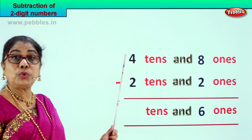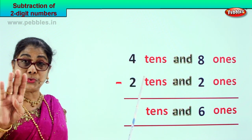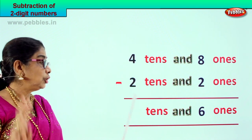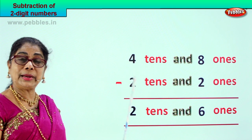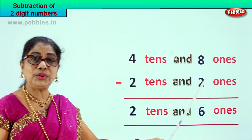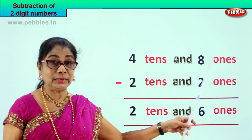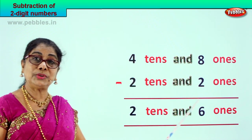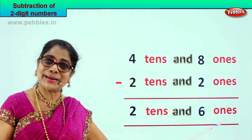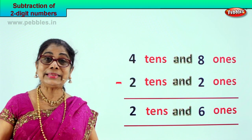Now we go to the tens place. 4 tens minus 2 tens — 4 minus 2 — 4 take away 2 is 2. So 4 tens minus 2 tens is 2 tens. So 48 minus 22 is 26. 4 tens and 8 ones minus 2 tens and 2 ones is equal to 2 tens and 6 ones. Did you enjoy doing subtraction of 2 digit numbers? Good. Let's take a new sum.